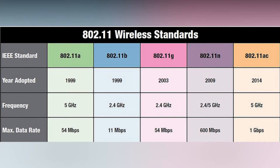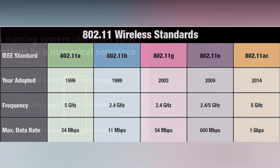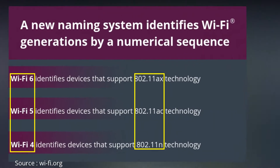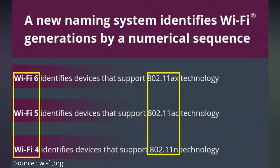It's really difficult to remember IEEE standards. This scenario has changed now. To make it easier, the Wi-Fi Alliance has introduced naming conventions for next-generation Wi-Fi, called Wi-Fi 6 or 802.11ax. It's a separate topic — I have already made a dedicated video. I'll leave the video link in the description if you are interested.